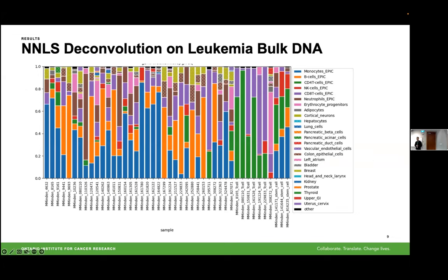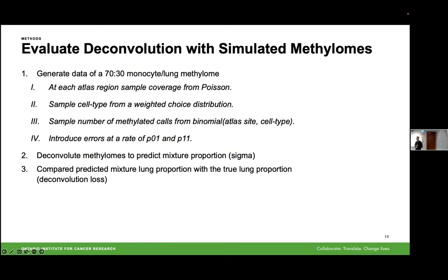Here's what our deconvolution results look like. First, using NNLS deconvolution on leukemia bulk data from Mark Minden's group at the UHN, we expected most samples to be assigned to blood cell types. We see that for 80–90% of samples we're getting blood cells, and especially our T cell populations are assigned almost completely to CD4 and CD8 T cells. However, the problem is that we don't have a definitive ground truth for what these samples should look like. So instead, we opted to make a simulation that creates complex mixtures using all the distributions I described.